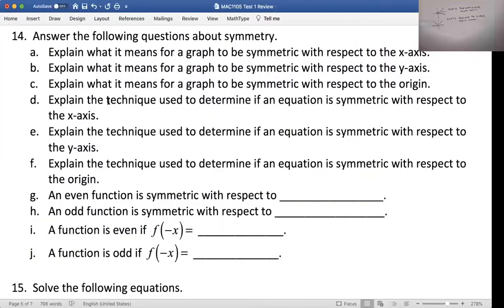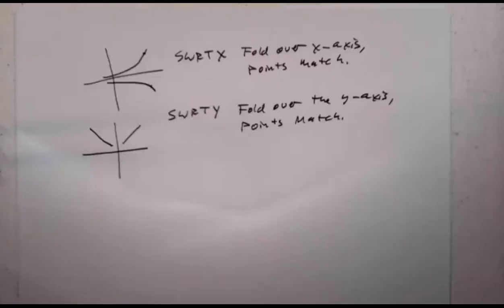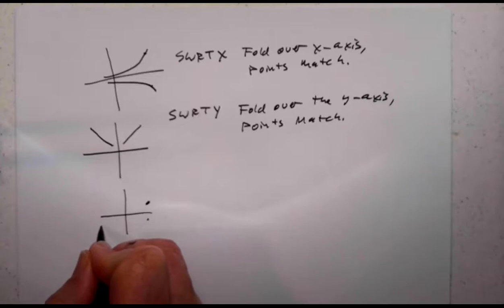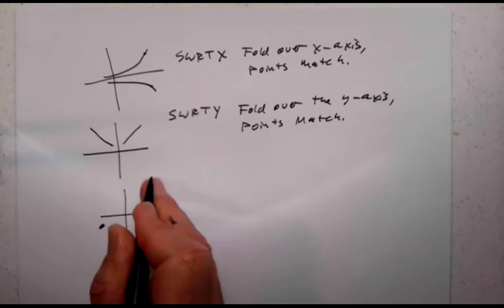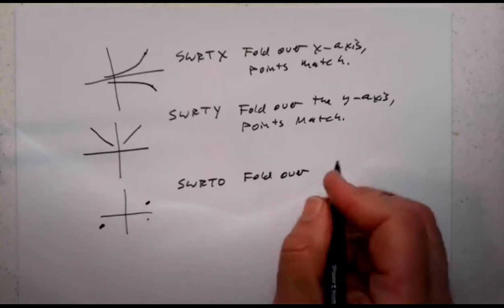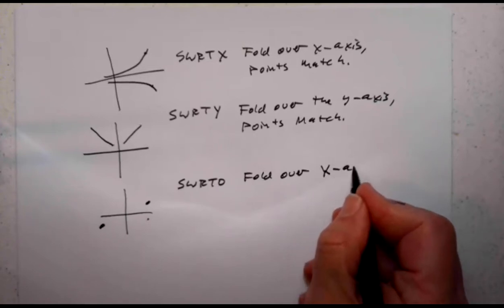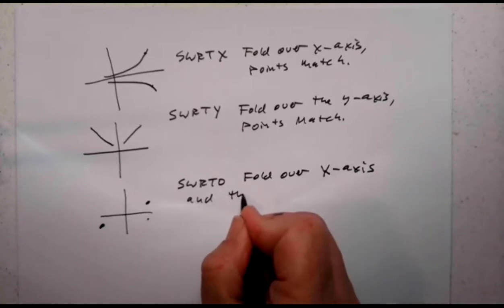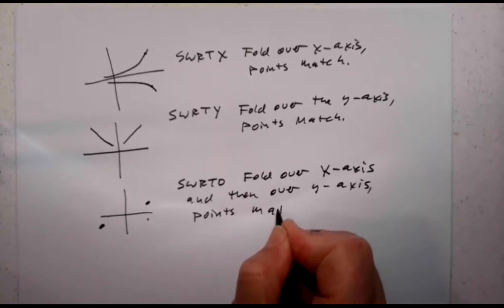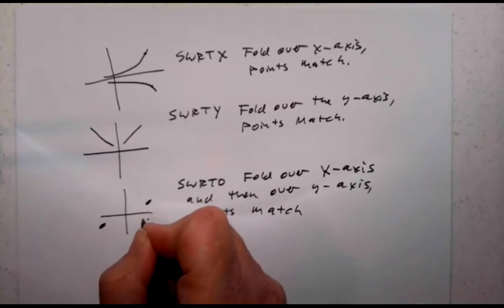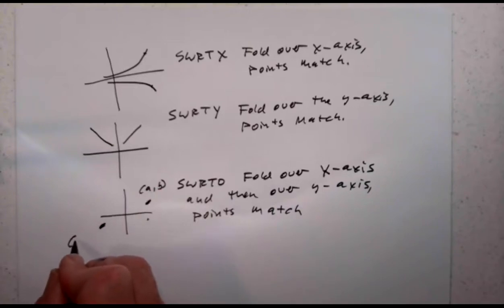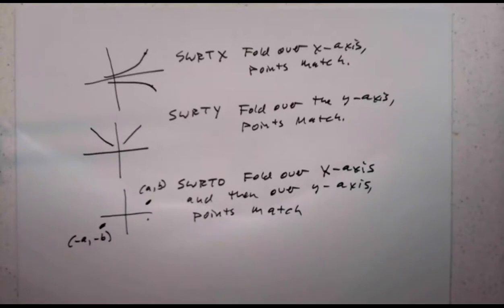The third question asks what it means to be symmetric with respect to the origin — that's a little trickier. If I have this point here, I fold it this way first and then fold it that way. Symmetric with respect to the origin means fold over both axes — fold over the y-axis and then the x-axis. Points match. This point might be (a, b), and its partner point over here is (-a, -b).